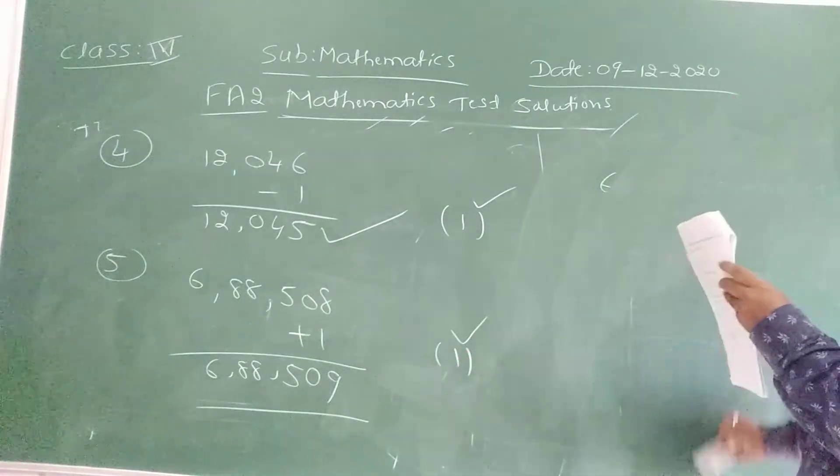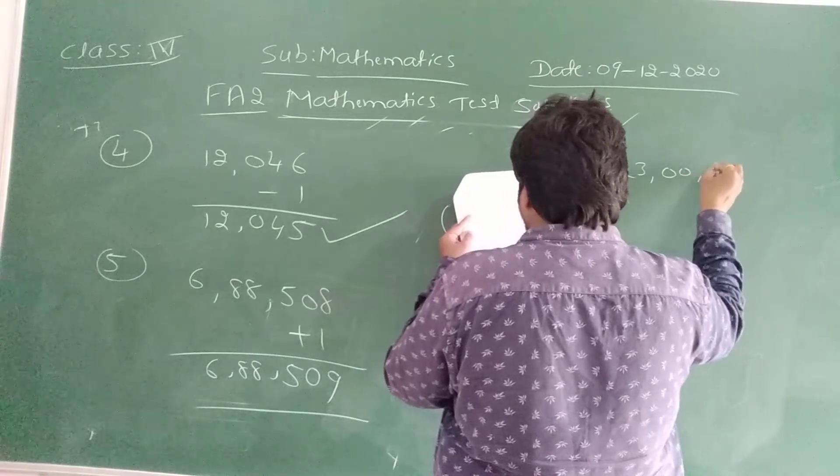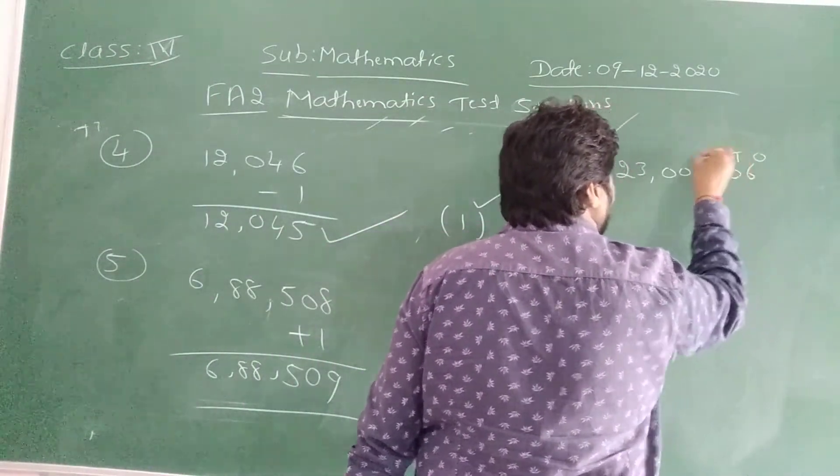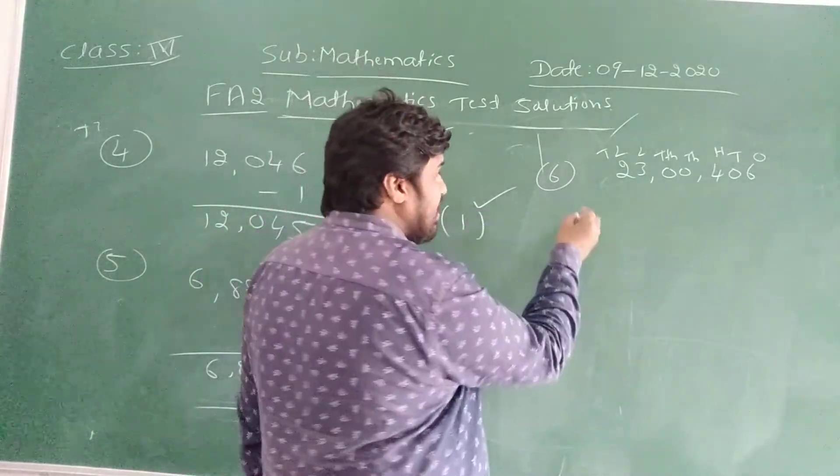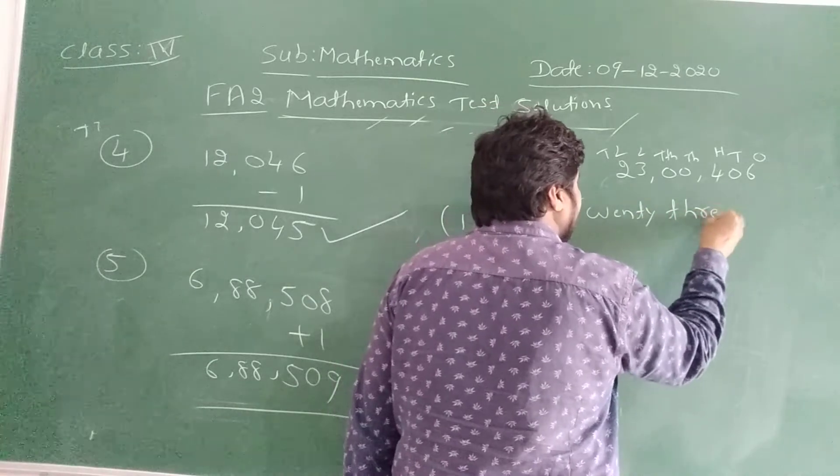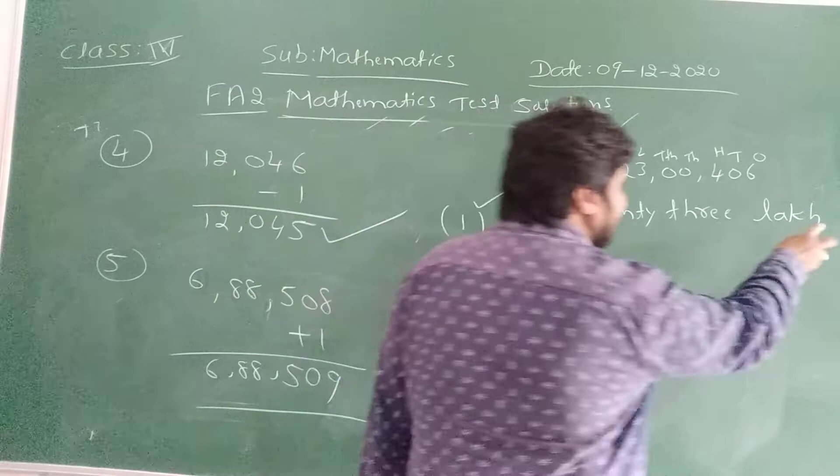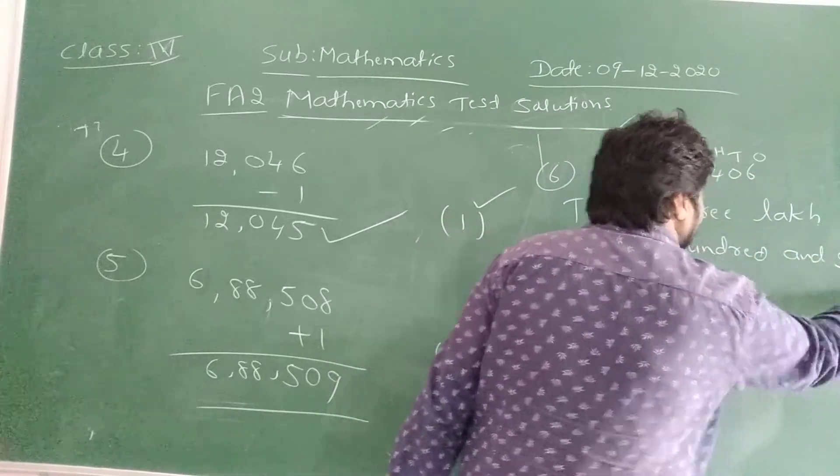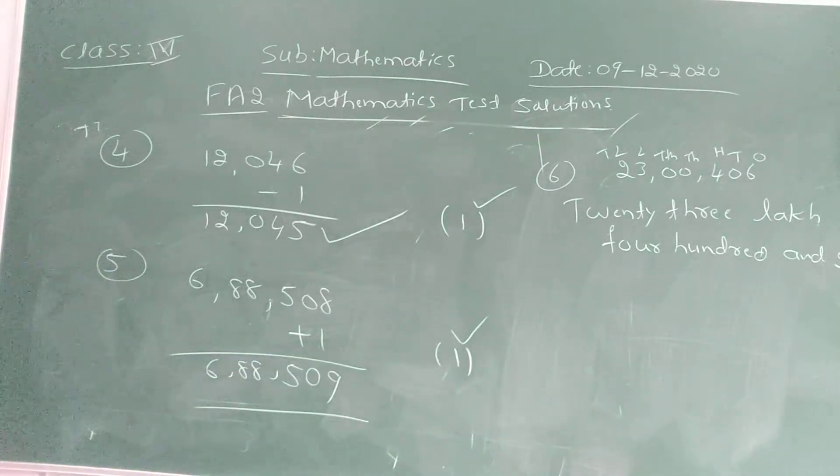Next question number 6, write the number name again. That number name is in Indian system of numeration. See, the number name is 23,0006. See children, now first we have to write the unit place, ten place, hundred, thousand, ten thousand, lakh. Therefore this number is 23 lakh. The number name is, 23, twenty-three lakh. However, ten thousand it is 0.